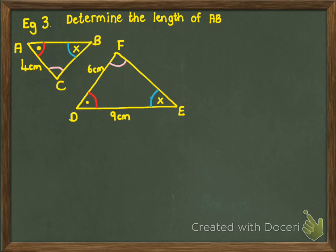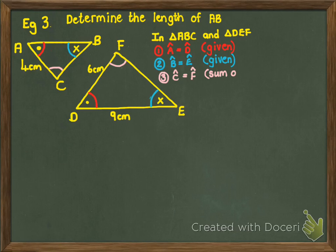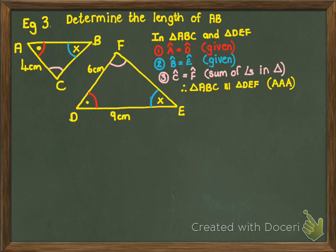So let's look at the formal proof for these two triangles. In triangle ABC and triangle DEF, you must name them in the right order — I started with the red angle in both triangles, then the blue, then the purple. Firstly, angle A equals angle D, given. Angle B equals angle E, given. And angle C equals angle F — reason: sum of angles in a triangle. You're explaining that they're only equal because both triangles must add to 180 and the original two angles are already equal. Conclusion: triangle ABC is similar to triangle DEF, angle, angle, angle.